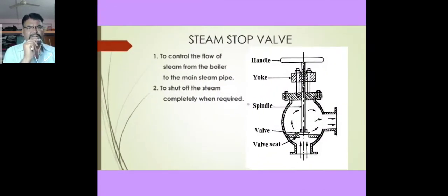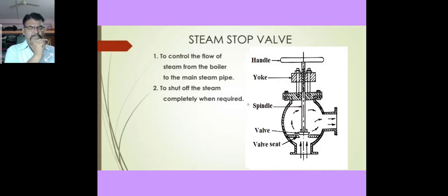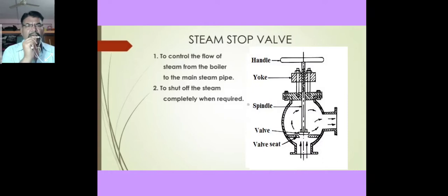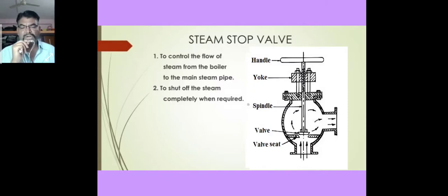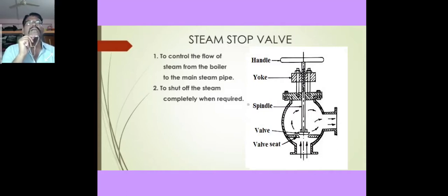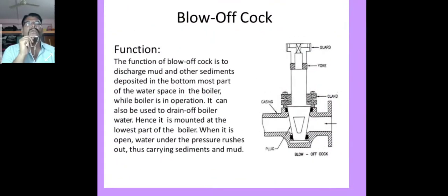The steam stop valve consists of a handle, yoke, spindle, valve, and valve seat. The function of the steam stop valve is to control the flow of steam from the boiler to the main steam pipe and to shut off the steam completely when required.